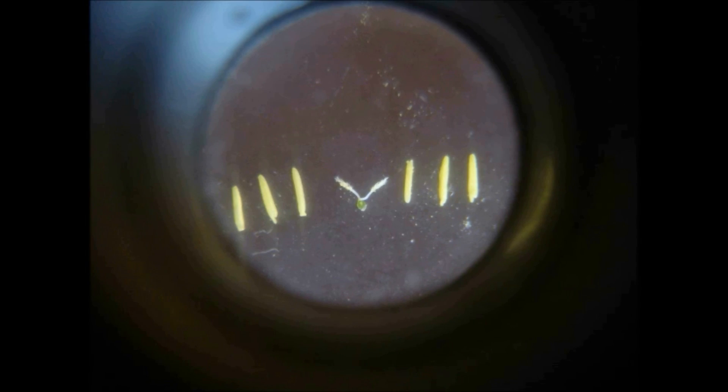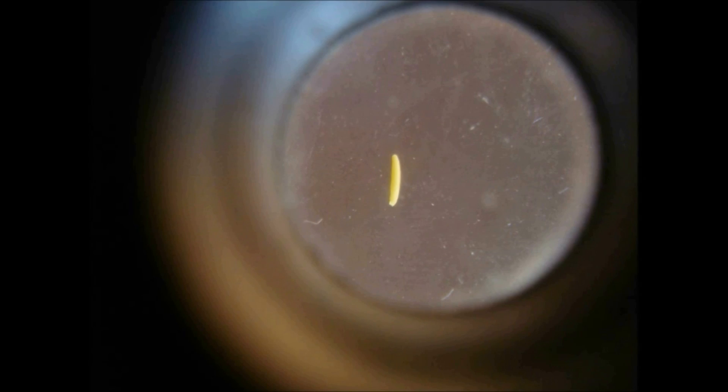These are the rice reproductive parts: six anthers and one carpel. After that, the individual anther and pistil are observed under the microscope.